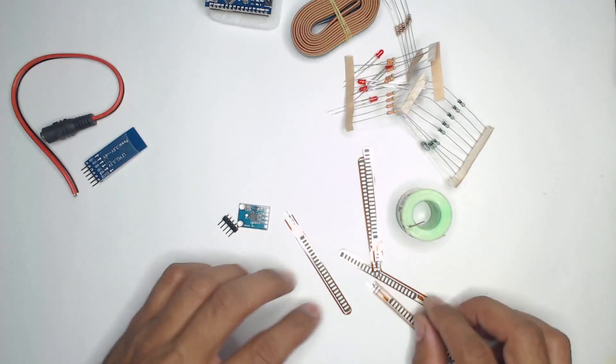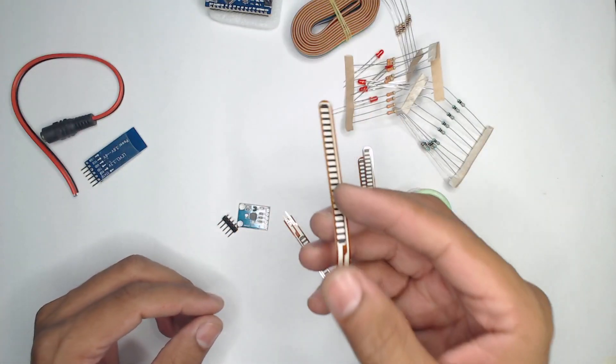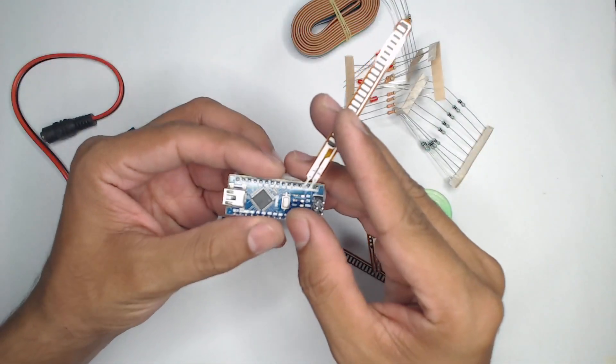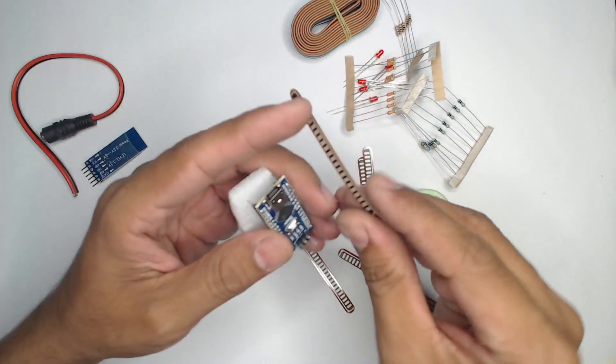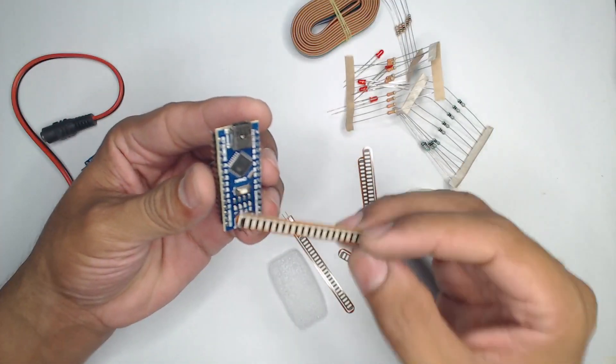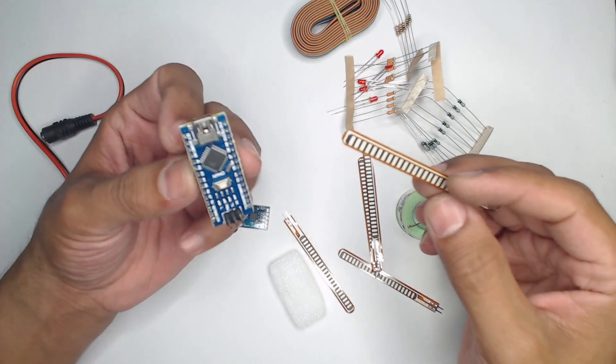Now let us first of all try to code this Arduino Nano and interface it in such a way that as soon as we bend this flex sensor, we can read what changes this Arduino Nano is able to read or scan, and then we are going to interface the rest of the sensors.